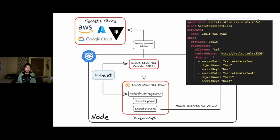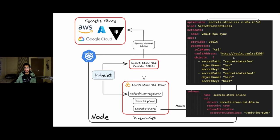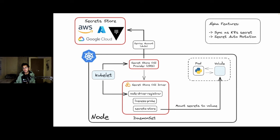Once the provider class is set up, the only thing left is to mount it onto a deployment. You specify the secret store inline, giving the driver name — called secret store, one of the CSI driver components — and a reference to the provider class you want to use. That's how the secret store knows from where to retrieve the secrets. At the end of the day, it mounts all the secrets inside a volume, and that's how the pod has access to those secrets.